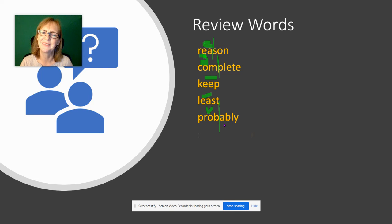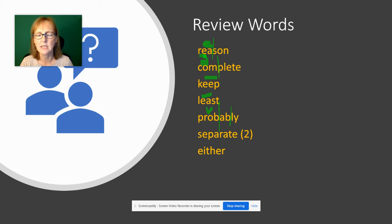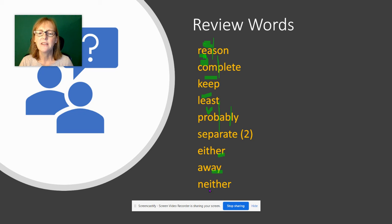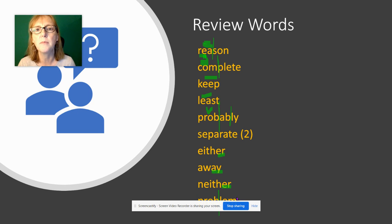'Probably' has three syllables. 'Separate' — remember it can be said two ways: 'sep-a-rate' and 'sep-a-rit'. 'Either' or 'either' — whichever way you say it — has the 'er' sound at the end. 'Away' — the first A is a schwa; the long A at the end is spelled A-Y. 'Neither' — same as 'either' with 'er' at the end. 'Problem' — divide between the B and L: prob-lem; short O in first syllable, schwa in second.